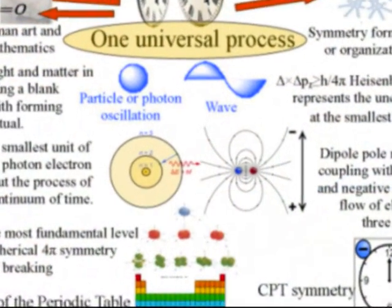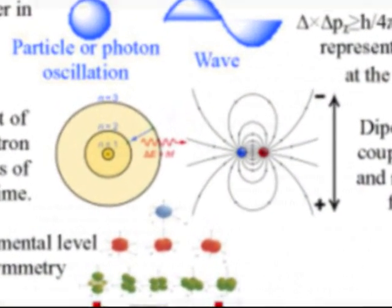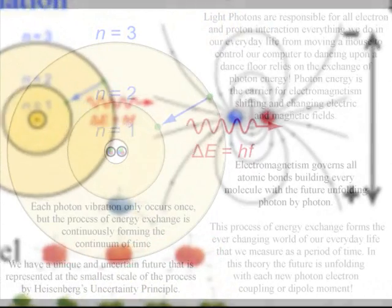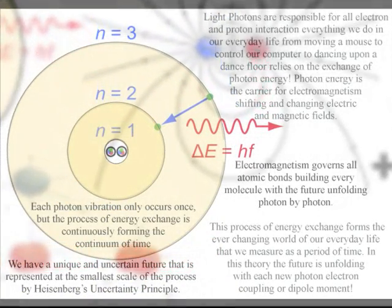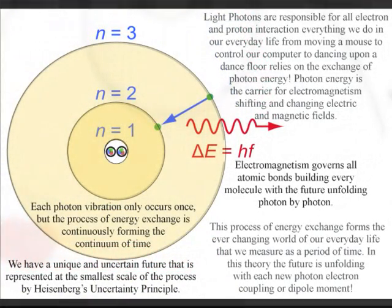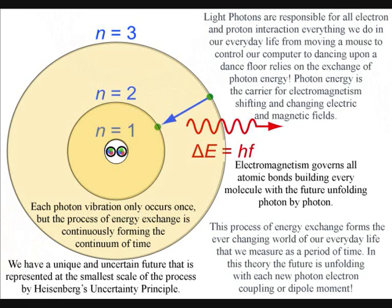As we move up the diagram, we have an image of a photon-electron coupling and a dipole moment. These are two different ways of explaining the same process with the future unfolding at the smallest unit of energy, the light quanta.